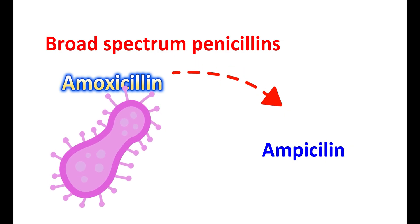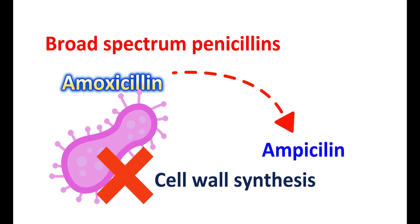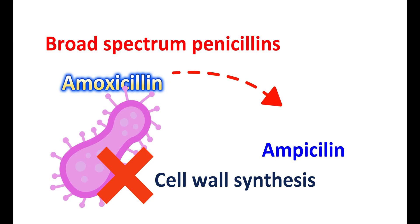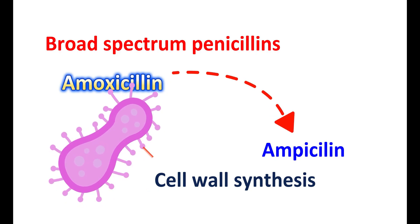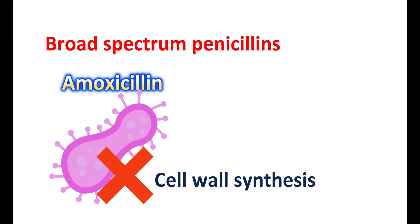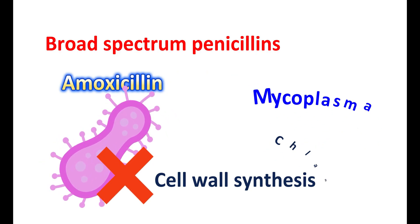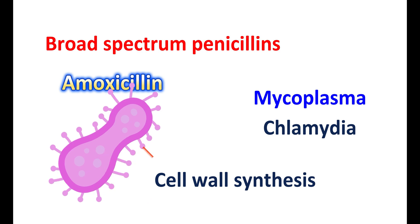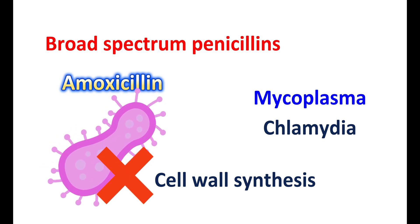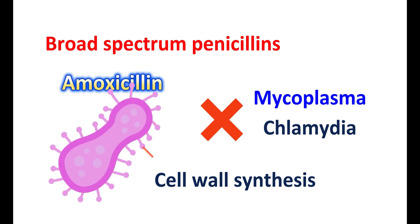Amoxicillin mainly acts by inhibiting bacterial cell wall synthesis. Therefore, it is useful in bacterial infections where the organism has a cell wall. A few bacteria, like mycoplasma and chlamydia, do not have a cell wall, so in such infections, amoxicillin is ineffective.